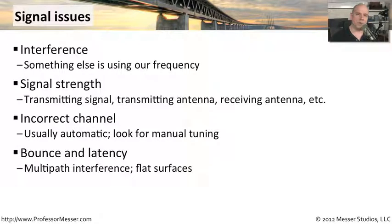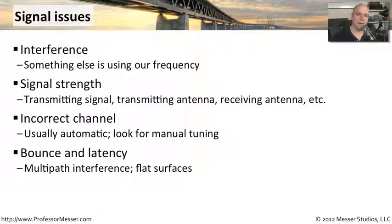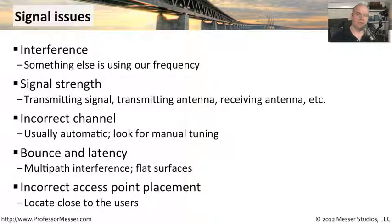In our wireless networks, we also have to think about bounce and latency. Flat objects like walls in our environment might cause the signal to bounce off of them, creating latency as it's received by a central antenna. This is multi-path interference, where the signal arrives at the access point at different times, creating a problem for the access point to hear properly. There may be architectural changes we can make to avoid this. We might also find that the access point was originally installed in the wrong place and simply needs to be moved, which will modify what our signal is doing.